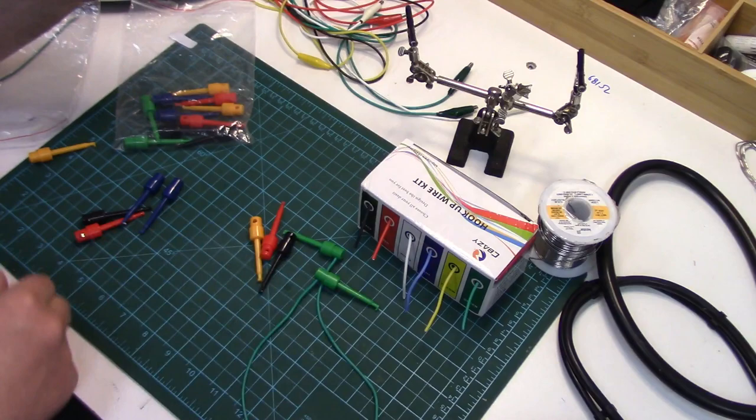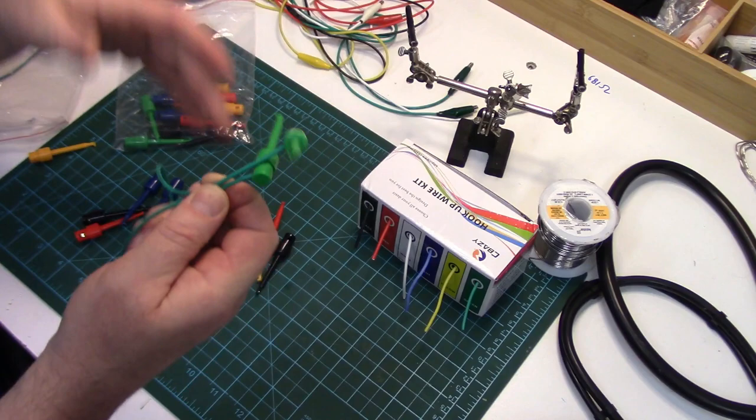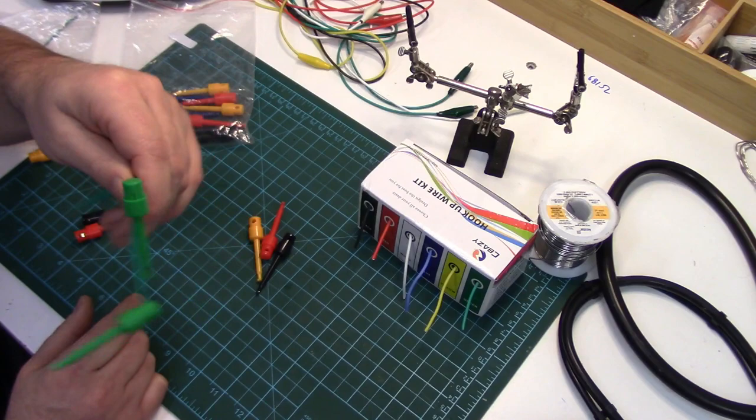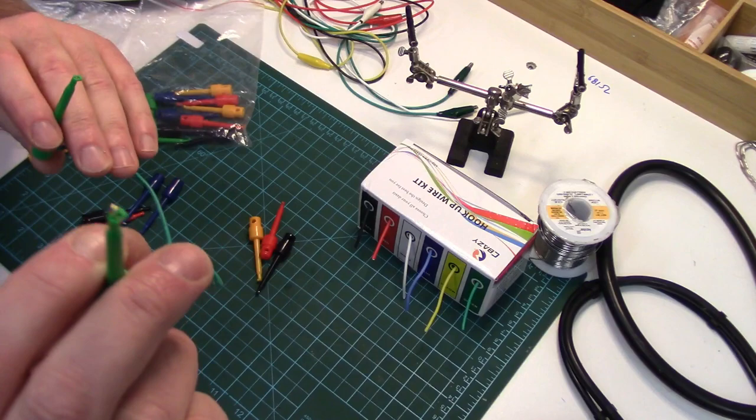I just thought I'd show real quick how I make these things in case anyone's interested. It's hard to find these with the silicone wire. Usually you can just get the little J-hook pins separately, but these are great for testing and jumping stuff on circuit boards.